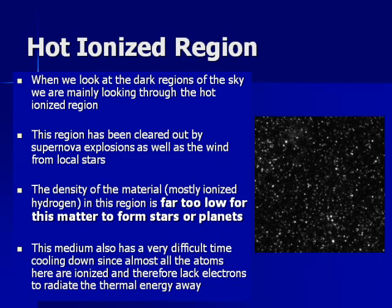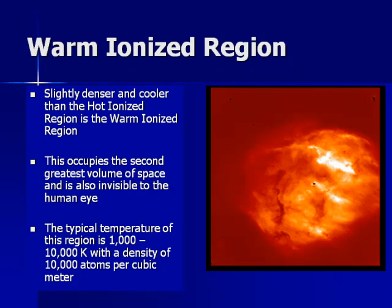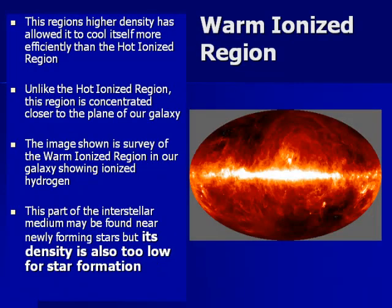We can detect a weak presence of this ionized region because if we look at starlight there's something called the Lyman forest — weak absorption lines from this ionized gas seen from distant stars. Slightly more dense and slightly cooler is the warm ionized region, which is still far too low in density to form stars and far too hot. A lot of this warm ionized region is primarily in the disk of our own galaxy.